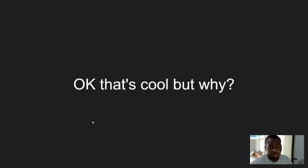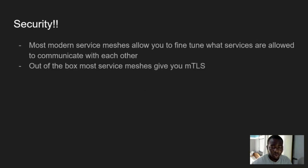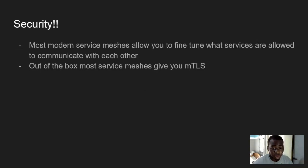Why use a service mesh? The first reason is security. Most modern service meshes allow you to define what services are allowed to communicate with each other. For example, Consul has something called intentions, which allow you to define communication rules between services. Going back to services A, B, and C — you could define a rule that says only service A is allowed to talk to service B, and only service B is allowed to talk to service C. This lets you fine-tune service communication and adds a layer of security.